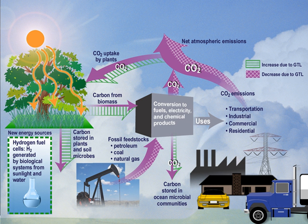Earth System Science can be studied at a postgraduate level at some universities, with notable programs at such institutions as the University of California, Irvine, University of Pennsylvania, and Stanford University. In general education, the American Geophysical Union, in cooperation with the Keck Geology Consortium and with support from five divisions within the National Science Foundation, convened a workshop in 1996 to define common educational goals among all disciplines in the Earth sciences.